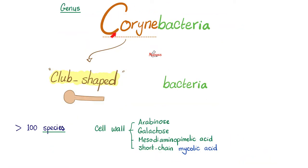What does the word Corynebacteria mean? It means club-shaped. The genus is called Corynebacteria. Species-wise, we have more than 100; the most famous is Corynebacterium diphtheriae. The cell wall of Corynebacteria is rich in Arabinose, Galactose, Mesodiaminopimelic acid, and short-chain mycolic acid.